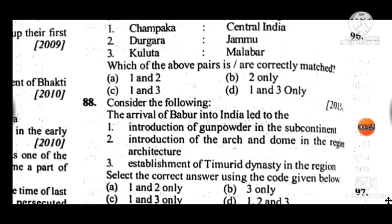Question 88: The arrival of Babur into India led to — select the correct answer. Answer is B — only the third option is correct: the establishment of the Timurid dynasty in the region. The other options are incorrect.